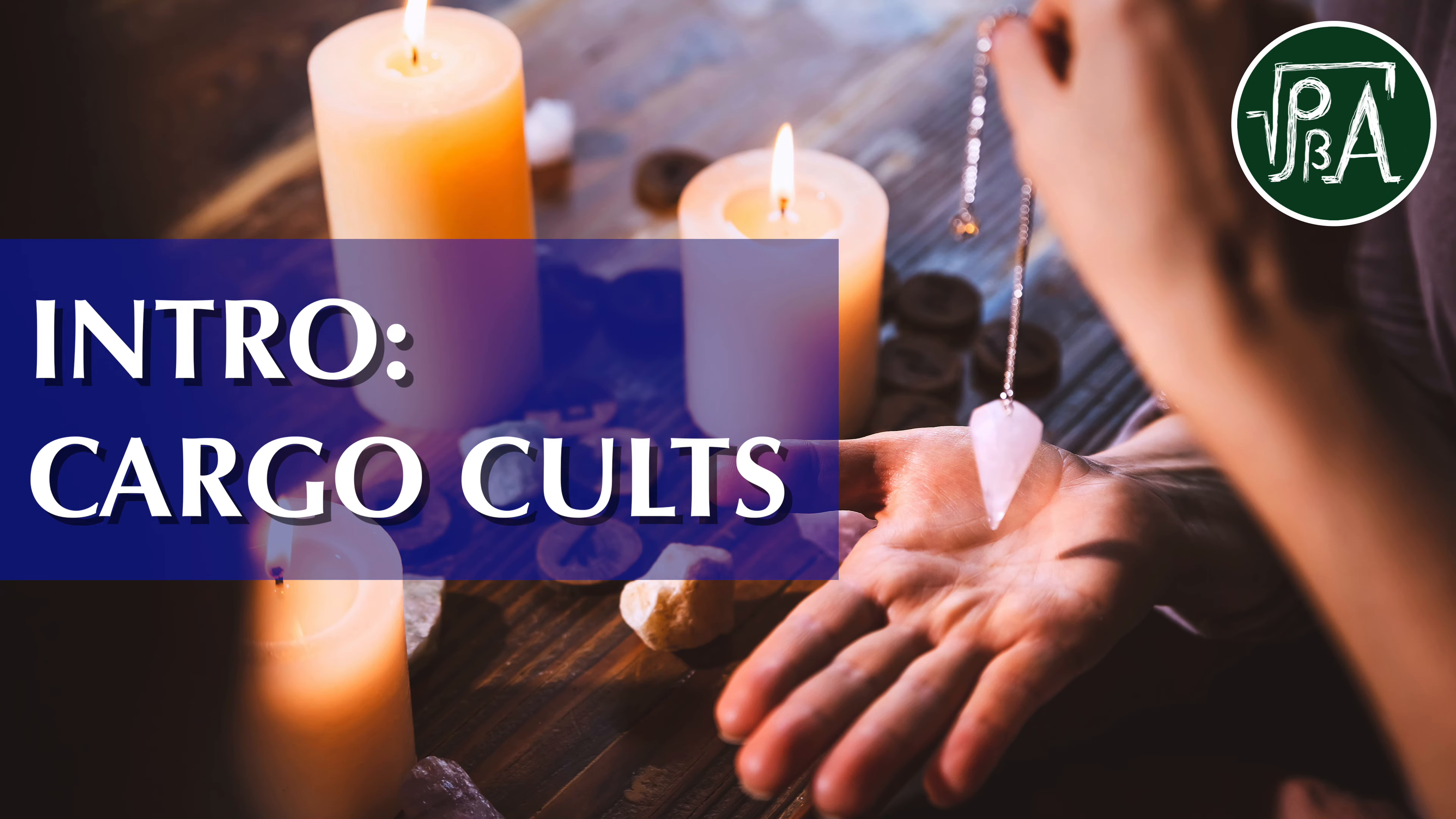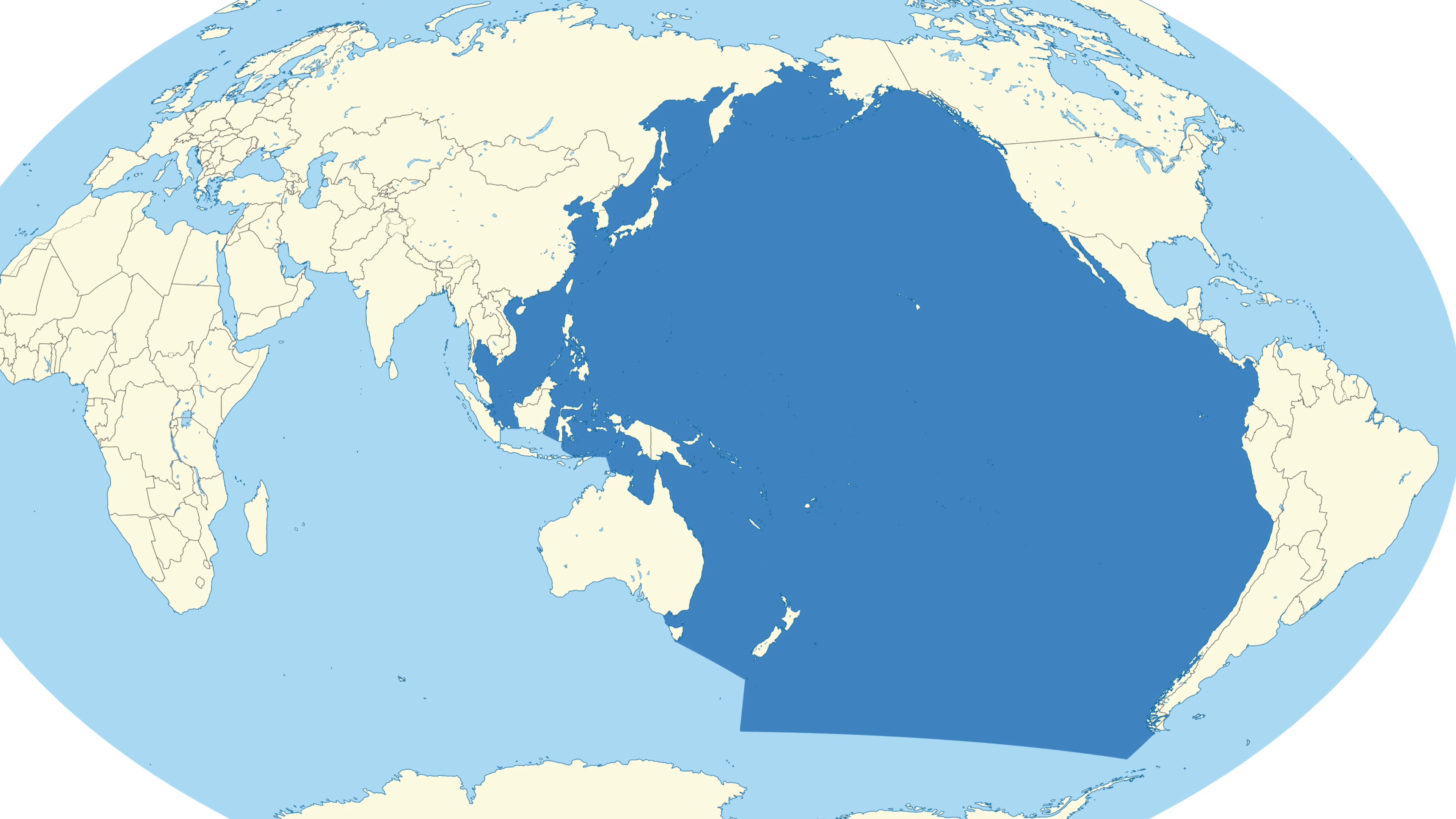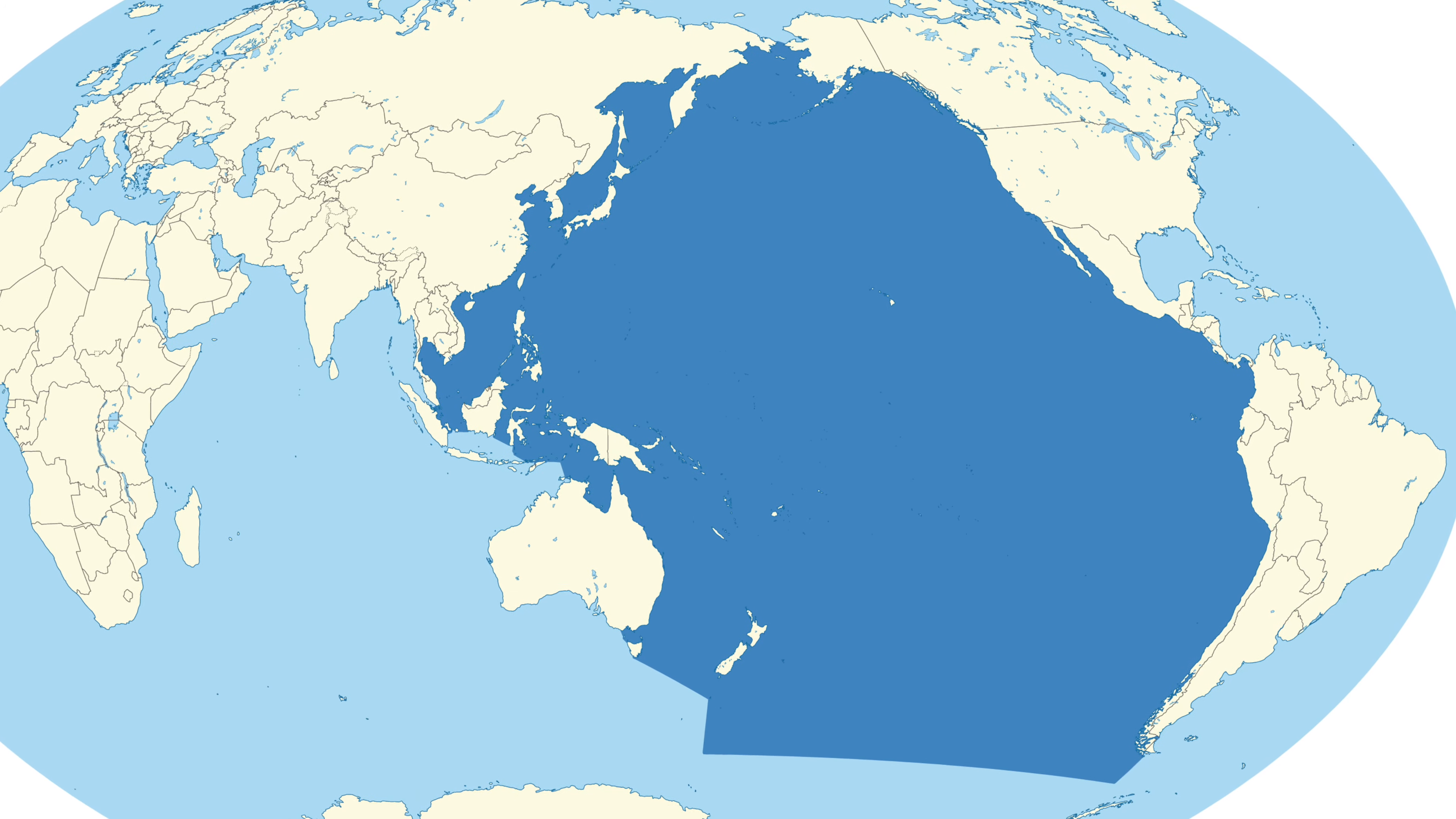Cargo cults. The Pacific Ocean is absolutely huge. It covers around a third of the entire surface area of the Earth and is essentially the largest named area on this planet.